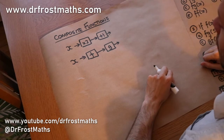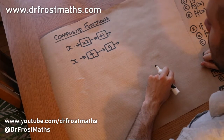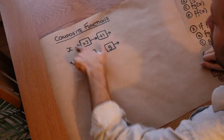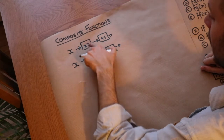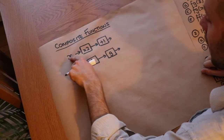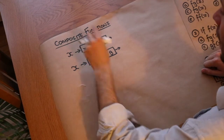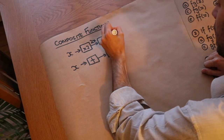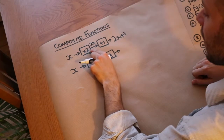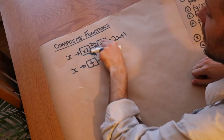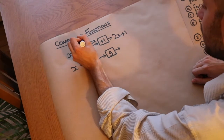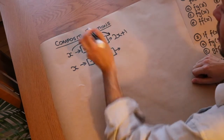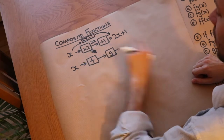In this video we're going to be looking at composite functions, where we chain two functions together. This is a number machine where x is fed through a function that multiplies by 2, outputting 2x, then fed through another function adding 1, giving 2x plus 1. We could represent these two functions as a single composite function where x goes into 'times 2 plus 1' and outputs that immediately.